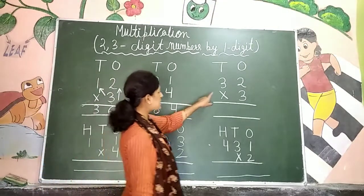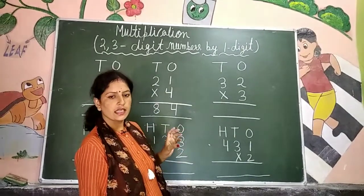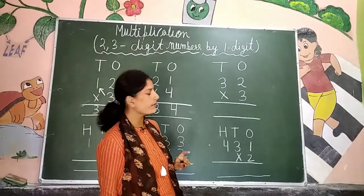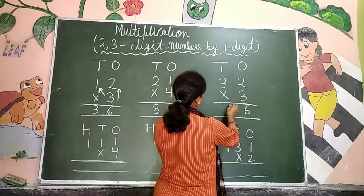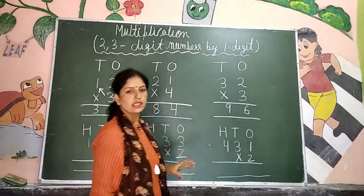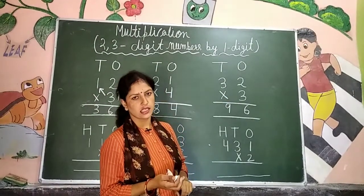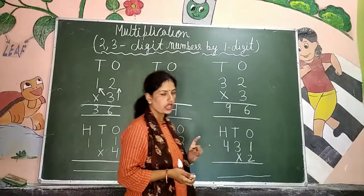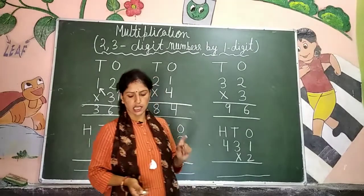Next is 32 multiply by 3. 32 को हमने 3 के साथ multiply करना है. This is again a 2-digit number by 1-digit. सबसे पहले 3 को 2 के साथ multiply करेंगे — 3 twos are 6. And 3 threes are 9. So it is 96. So dear students, यह थी आपकी 2-digit की 1-digit के साथ multiply.